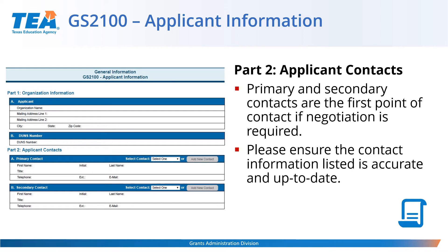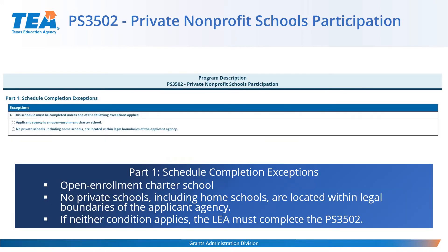Next, we will go to the PS3502 schedule for private nonprofit schools participation. Part 1 of the schedule shows the schedule completion exceptions. If the grantee is an open enrollment charter school, or if there are no private schools including home schools located within the legal boundaries of the applicant's agency, the grantee will check one of the two applicable options and be done with the PS3502 schedule. Otherwise, the grantee must complete the remainder of the schedule.